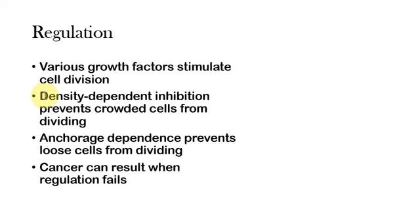The first is that density-dependent inhibition prevents crowded cells from dividing. In other words, certain cells, such as epidermal cells and cells that are on the inside lining membranes, will divide if there's an open space next to them, but will not if they're crowded around on all sides by other cells. What this allows is if there's a wound, those cells will divide to fill it up. But if the skin or membrane is intact, those cells will not divide.